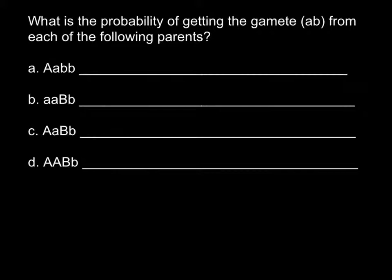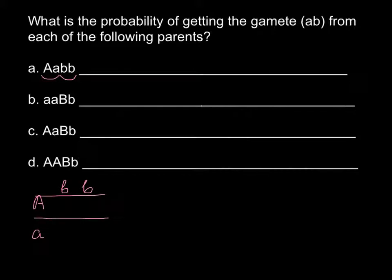So for A, we have two pairs of alleles. Here is the first couple: capital A, small a. And here is the second couple: small b, small b. In order to find all different possible combinations, we just have to draw a Punnett square. So we may have capital A and small a on one side, and small b, small b on the other side. Now we build the Punnett square.